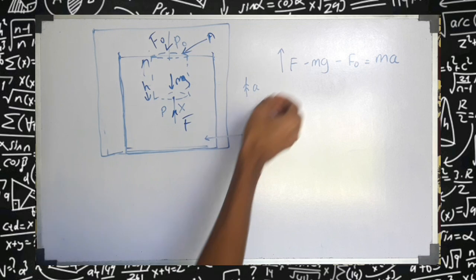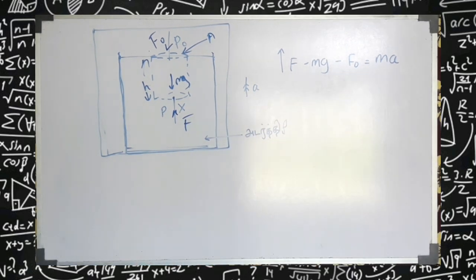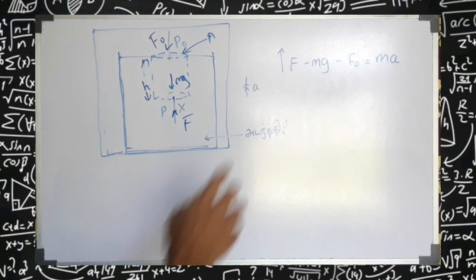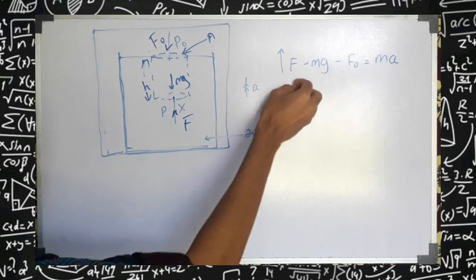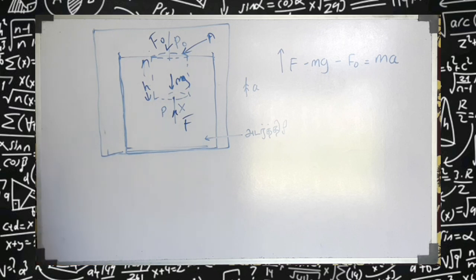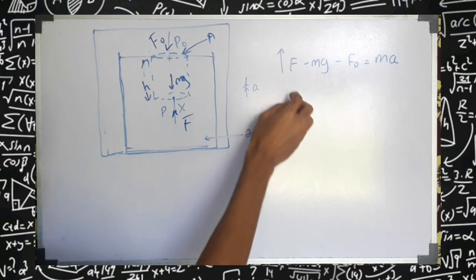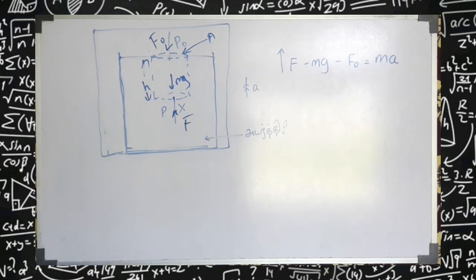So, I will say that f minus mg minus f0 equals m into a. Now the y is an amook. So, I am going to say that — I will say that — so a, I will say that f over a is an amook.